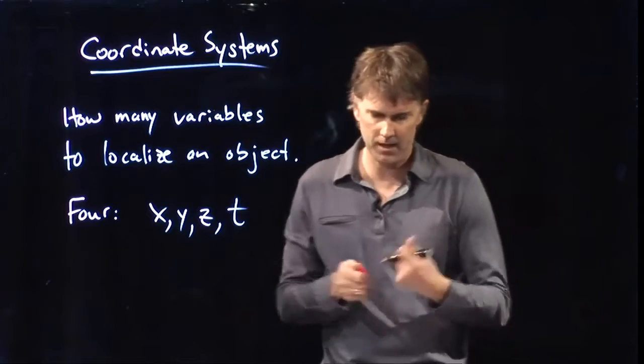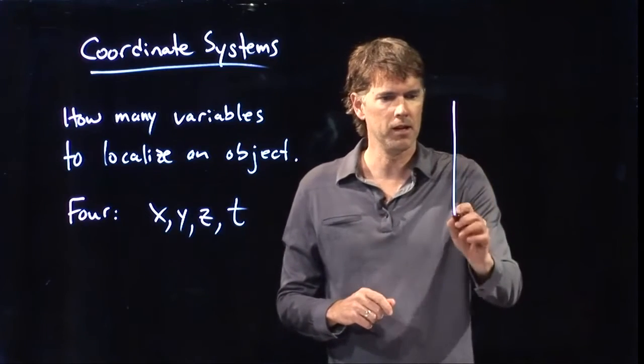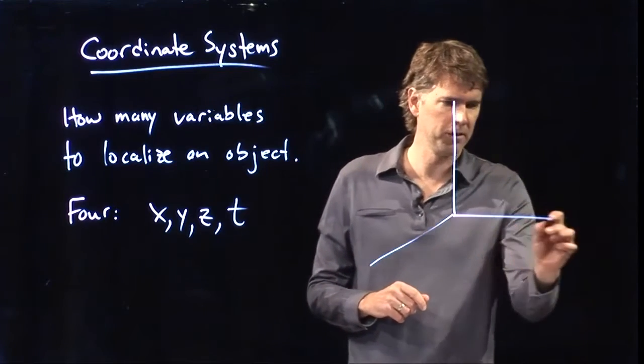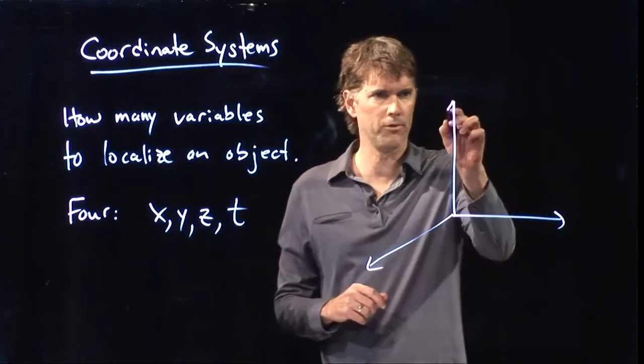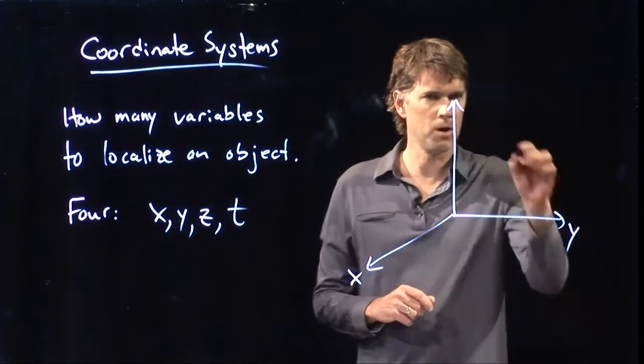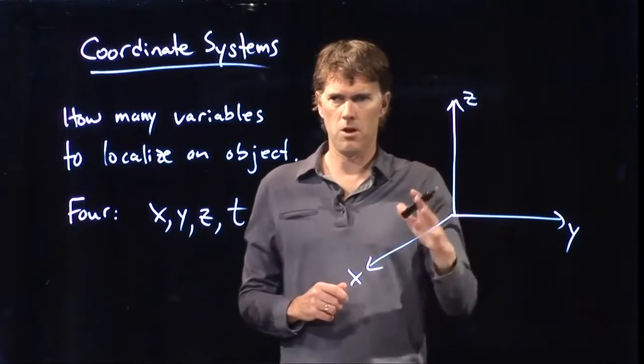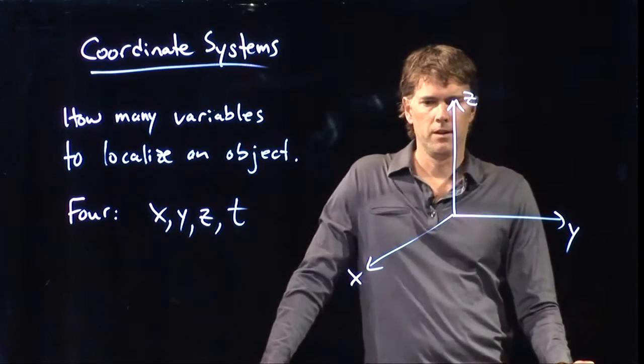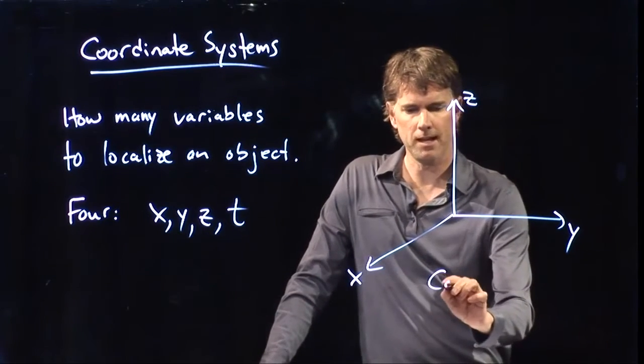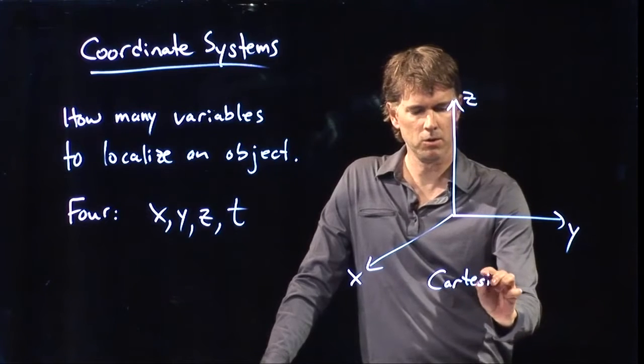Alright, so let's start with this idea of x, y, z, and everybody has probably seen this sort of picture over and over again. X, y, z, where they're all at right angles to each other. This is of course called a Cartesian coordinate system.